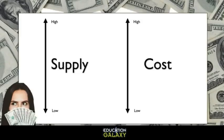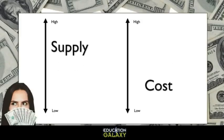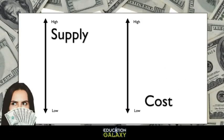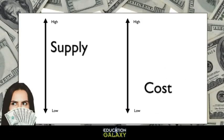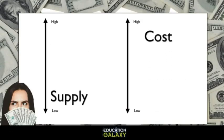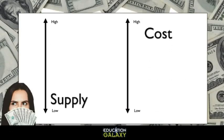In general, when the supply is high, the cost is low. And when the supply is low, the cost is high.